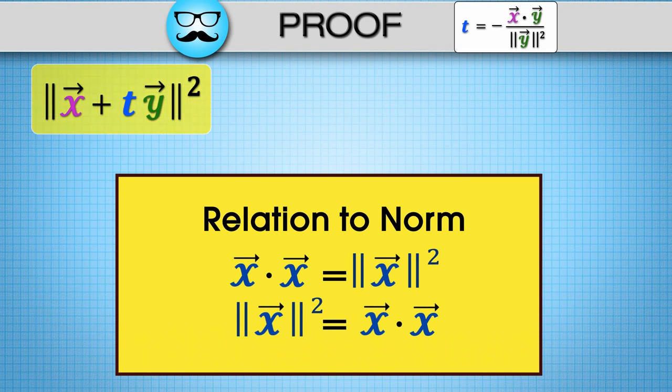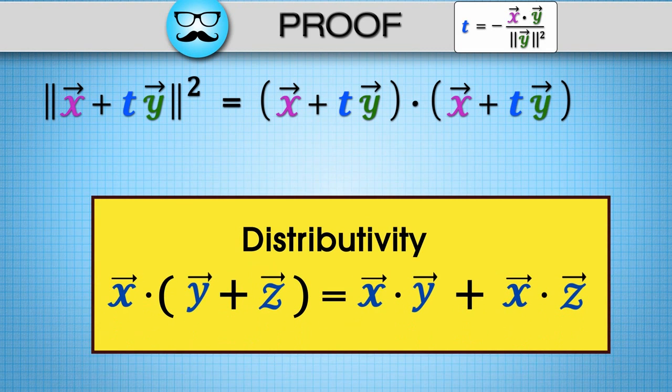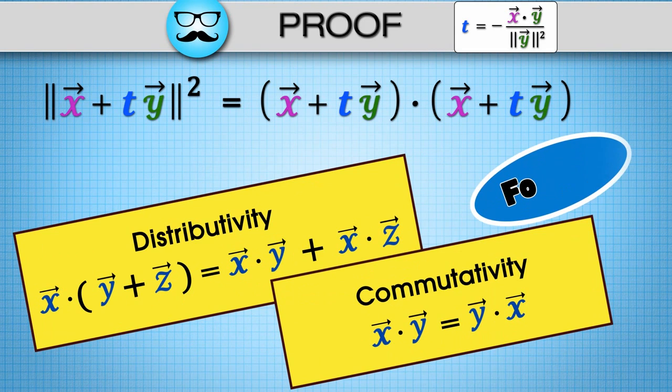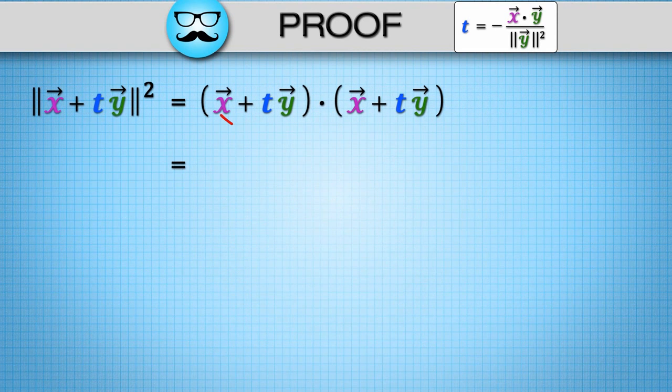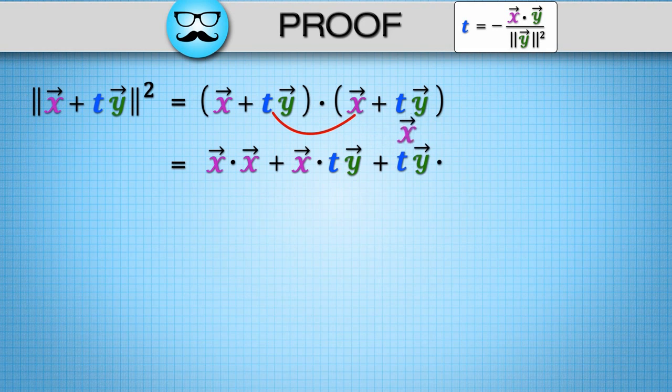The norm of x plus ty squared can be expanded as x plus ty dot itself. Applying the distributive and commutative laws, or as what your mates call foiling, we get x dot x plus x dot ty plus ty dot x plus ty dot ty.